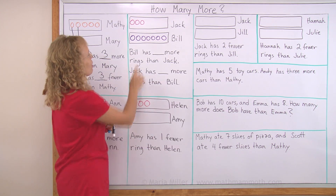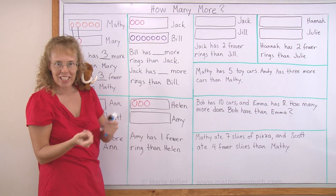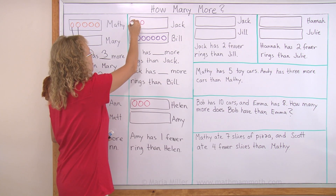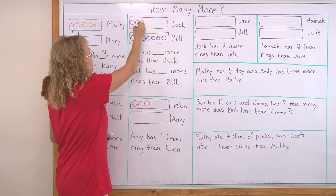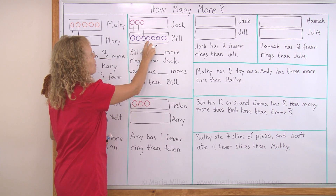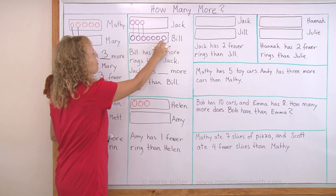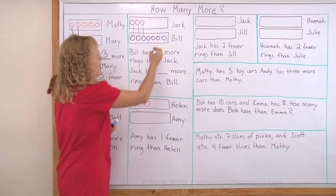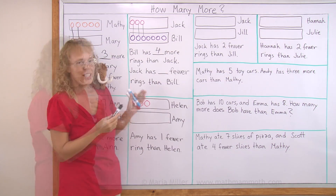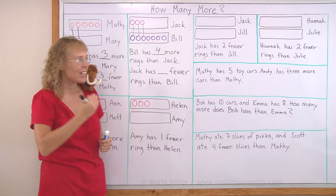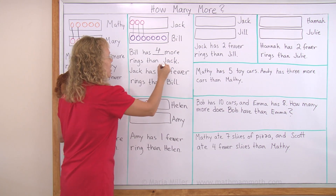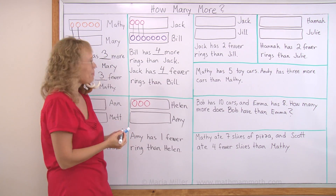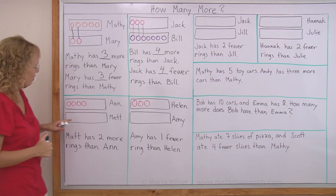Over here, look — Bill has more rings than Jack. But how many more? We can do the same, we can match these. And now count here: one, two, three, four. Bill has four more rings than Jack. At the same time, Jack has four fewer rings or four less rings than Bill.